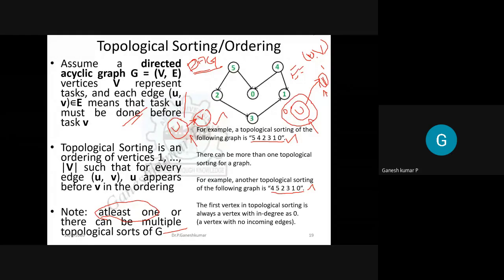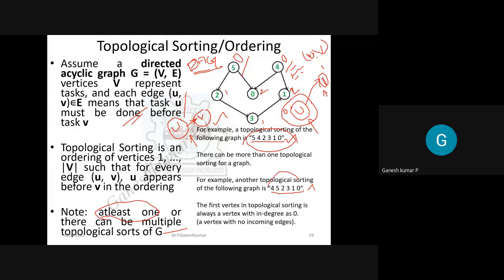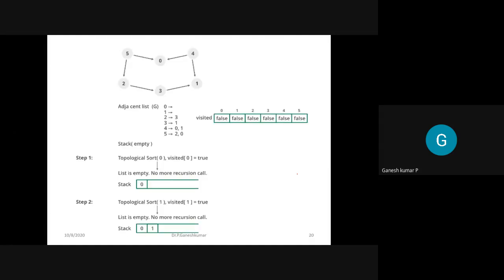For the given graph, calculate the in-degree of all nodes. Node 5 has in-degree 0, node 4 has in-degree 0, node 2 has in-degree 1, node 0 has in-degree 2, and node 1 has in-degree 1. Since nodes 5 and 4 have zero in-degree, topological sorting can start with either 5 or 4, giving different valid answers.